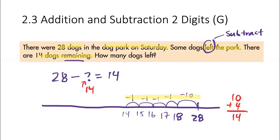If you don't like to use a number line, you can just traditionally go 28 minus 14, and that would be 14. It's up to you. So 14 dogs are left.